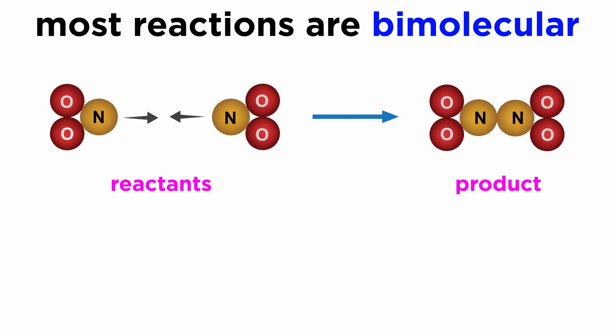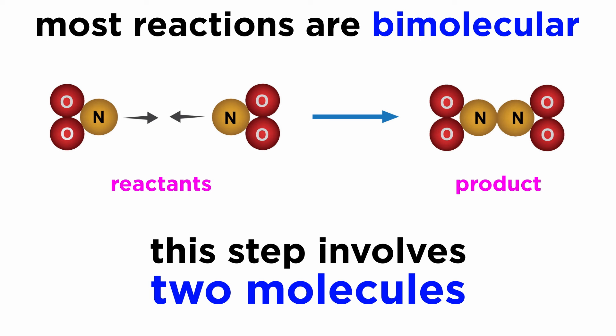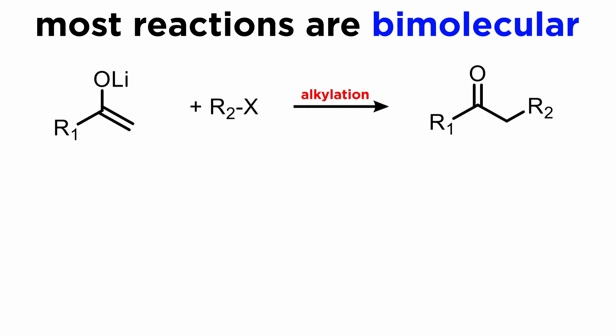As we know, in many cases, a chemical reaction is simply the result of the collision of two molecules with the right energy and orientation. Such reactions are called bimolecular because the step forming the product involves two molecules. An example of this would be enolate alkylation, in which an alkyl halide is attacked by the C-terminus of the enolate, forming a substituted ketone.